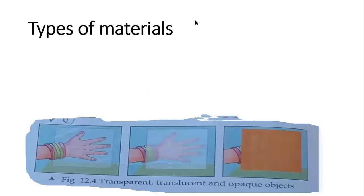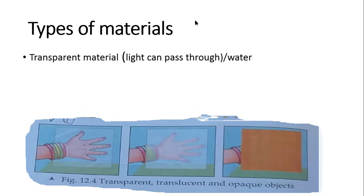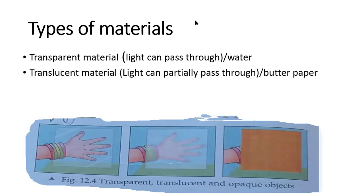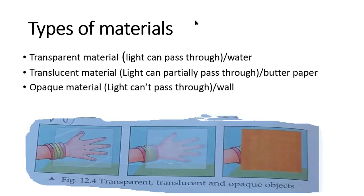We can categorize materials into three different types. First, transparent material, which lets light pass through it — for example, water. Second, translucent material, which lets light pass through partially — for example, butter paper. And the last one is opaque material, which does not let light pass through it — for example, a wall.